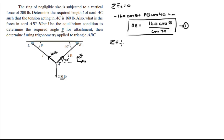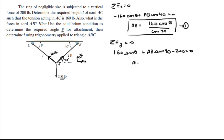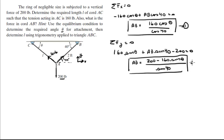The sum of the forces in the Y direction is equal to zero: 160 sine of theta going up, plus AB sine of 40, minus 200, equals zero. Solving for AB gives AB equal to 200 minus 160 sine of theta, all over sine of 40. Let's call this equation 2.